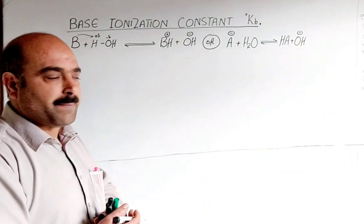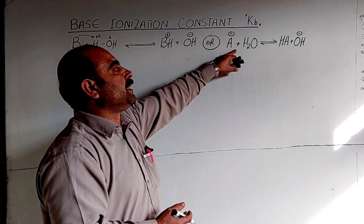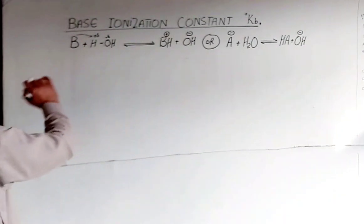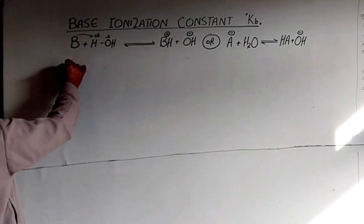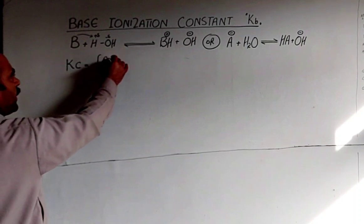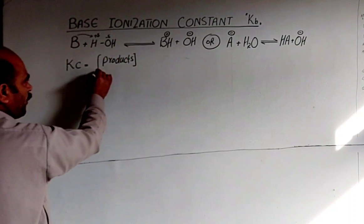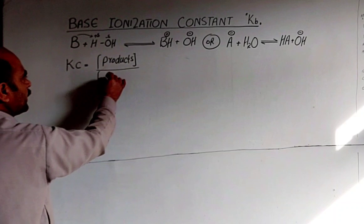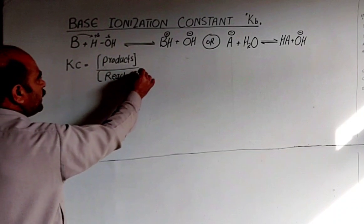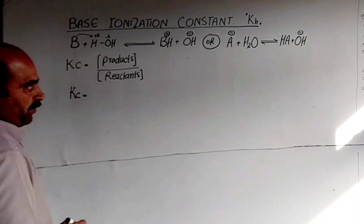Since the equation is reversible, an equilibrium state is established and the law of mass action is applied. The equilibrium constant, Kc, is then expressed as the concentration of products divided by the concentration of reactants. Kc equals the product of concentration of products.